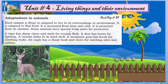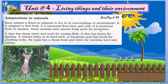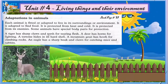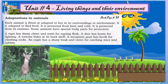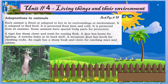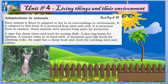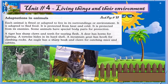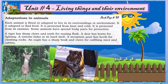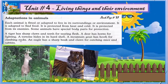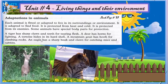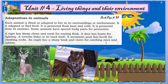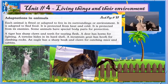Some animals have special body parts for protection. A tiger has sharp claws and teeth for tearing flesh. A deer has horns for fighting. A tortoise hides in its hard shell. A mountain goat has hooves for climbing rocks. An eagle has a sharp beak and claws for catching mice and rabbits.